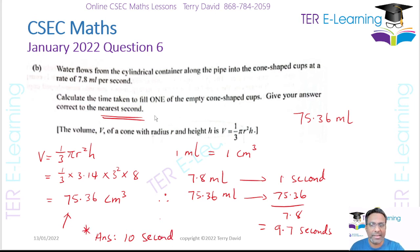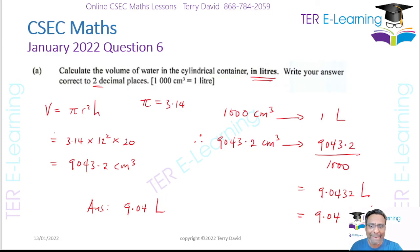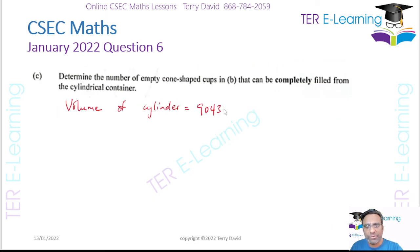Next part: determine the number of empty cone-shaped cups that can be filled from the cylindrical container. That's easy enough to work out. You know the volume of the cylinder is 9043.2 cm³, and the volume of the cup is 75.36 cm³.